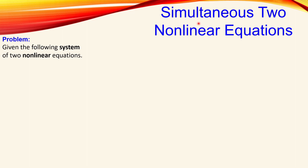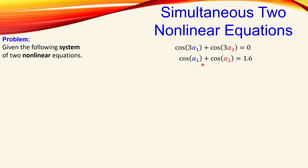In this example, we have two simultaneous non-linear equations. The first equation is: cosine of 3α₁ plus cosine of 3α₂ equals zero. The second equation is: cosine of α₁ plus cosine of α₂ equals 1.6. We designate these as equations 1 and 2, and we want to solve for α₁ and α₂, which are also called the delay angles in inverting design.